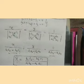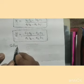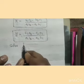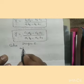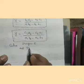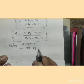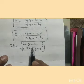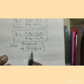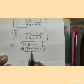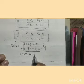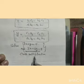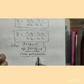Now we are going to share an example. Solve 2x plus y equal to 5 and 3x plus 2y equal to 8. These are a pair of linear equations and we have to solve them by cross multiplication method.